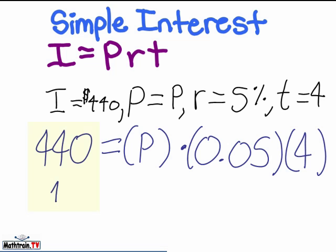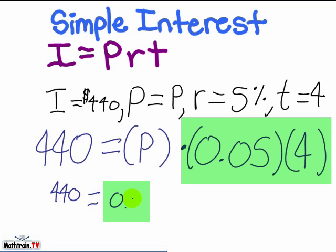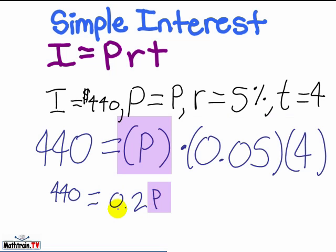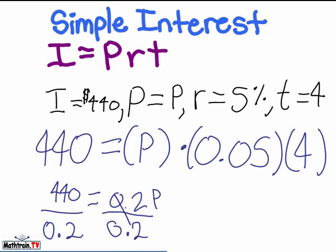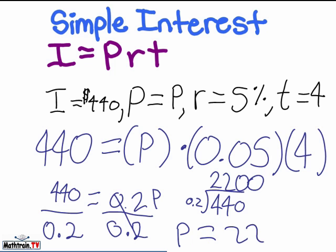And so 440 equals 0.2P, because we still do not know what P is. So now we're going to divide both sides by 0.2. And 0.2 and 0.2 cancel out. And when you divide 440 by 0.2, you get 2200. So P equals 2200.